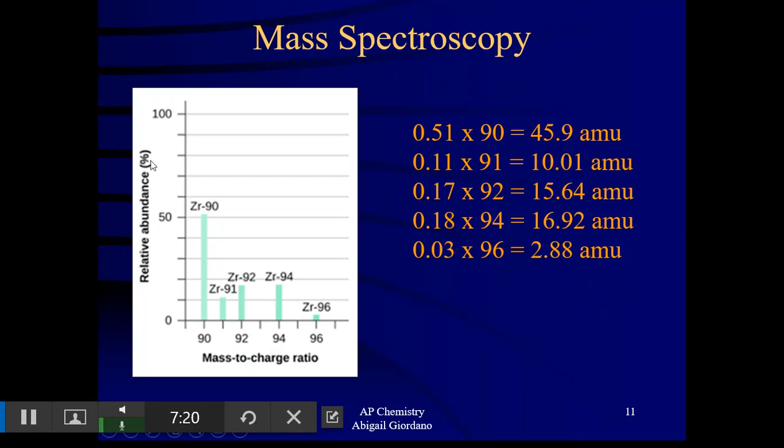Again, on this graph, I'm having to estimate a little bit those percentages. I'm going to add these five atomic mass units together and I get 91.35 AMU. If I look at my periodic table, I can see that zirconium is the element with the closest atomic mass to that number, 91.35.